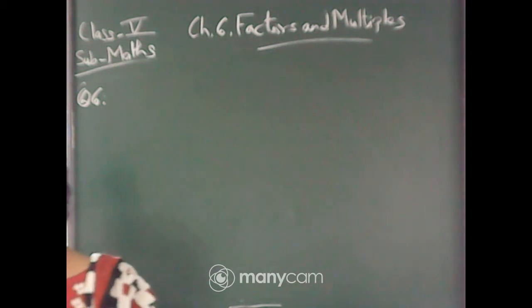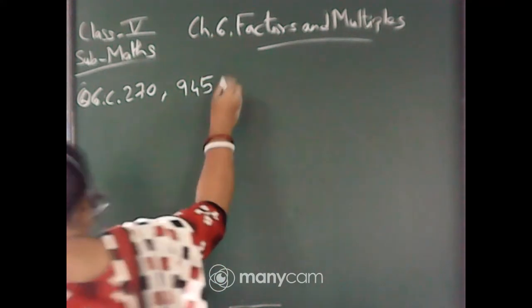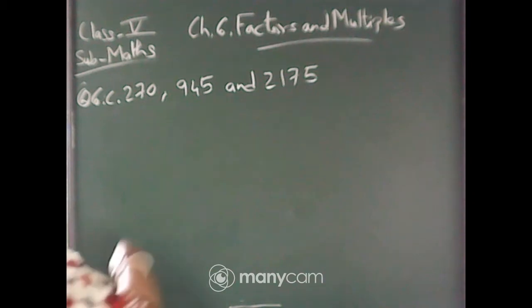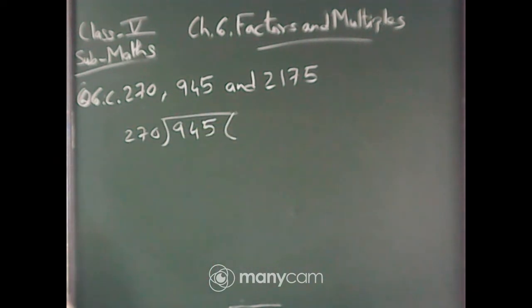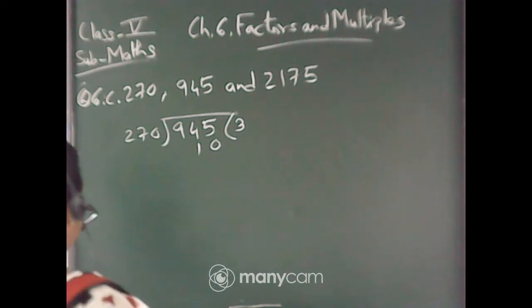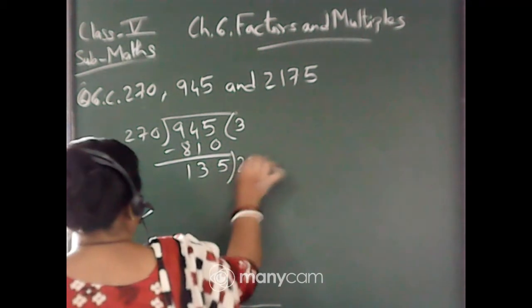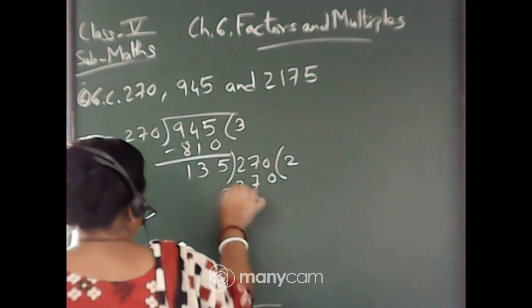Number c is 270, 945, and 2175. So obviously you will take the first two. So let us divide, 270 outside, 945 inside. Now let us divide. This will be 3 times 270 is 810. 3 times 7 is 21, carry 2. 3 times 6 is 7, 80. Now 270 will come down and as usual, 2 times 270.